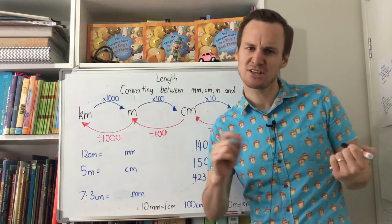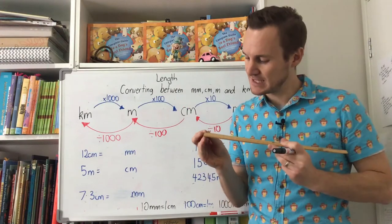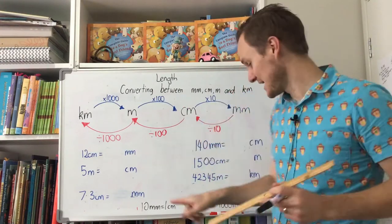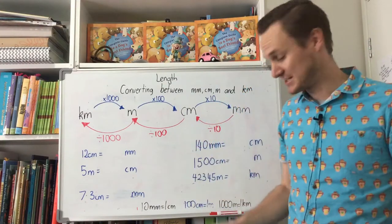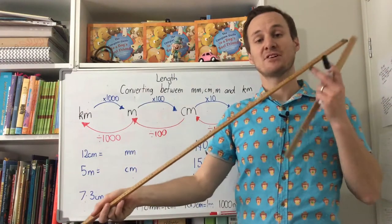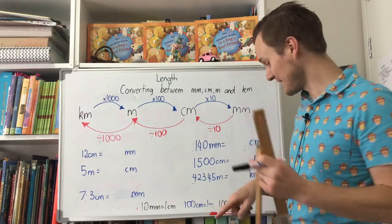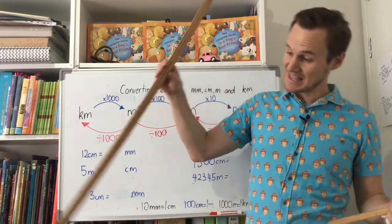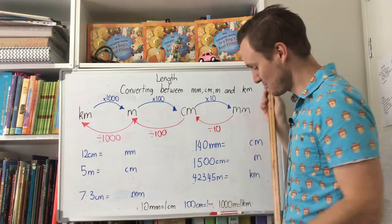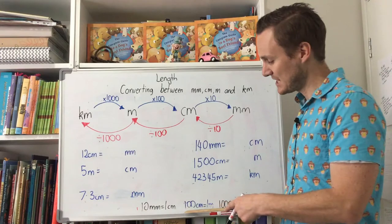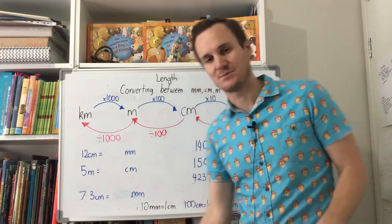Before we start, let's look at length. The smallest unit of measurement we usually measure with is millimetres. If you have your 30 centimetre ruler, you'll see there are 10 millimetres in one centimetre. And if you take 100 of those centimetres, you get a metre ruler. Then if you took 1000 metres, that equals a kilometre. So it progressively gets bigger: 10 millimetres equals a centimetre, 100 centimetres equals a metre, and 1000 metres equals a kilometre.